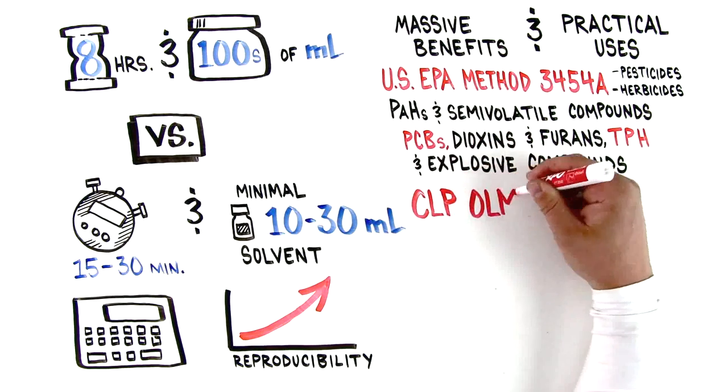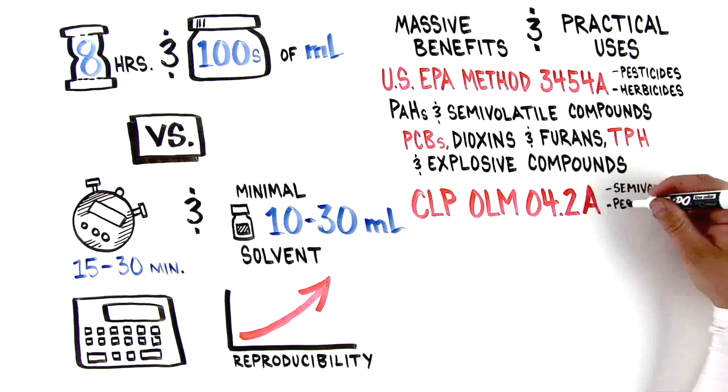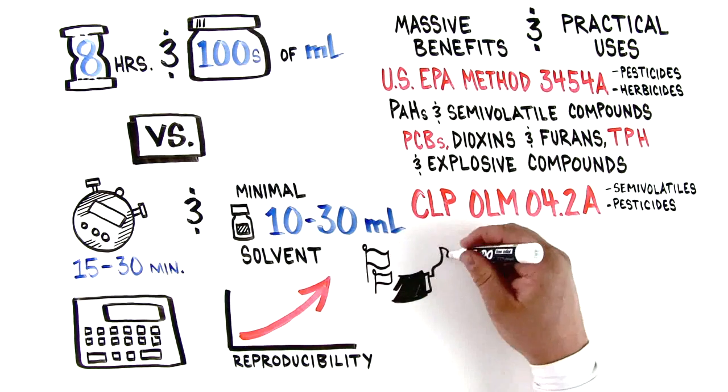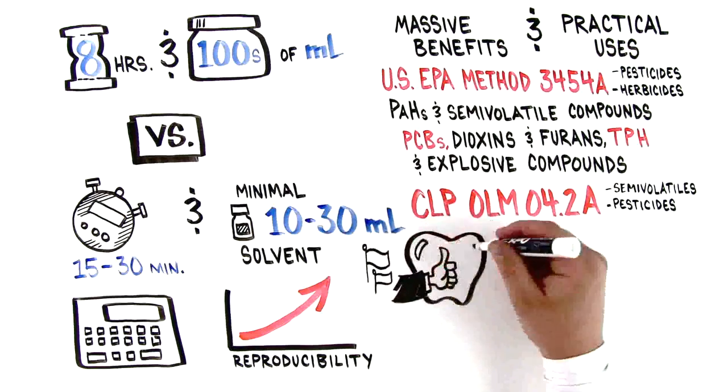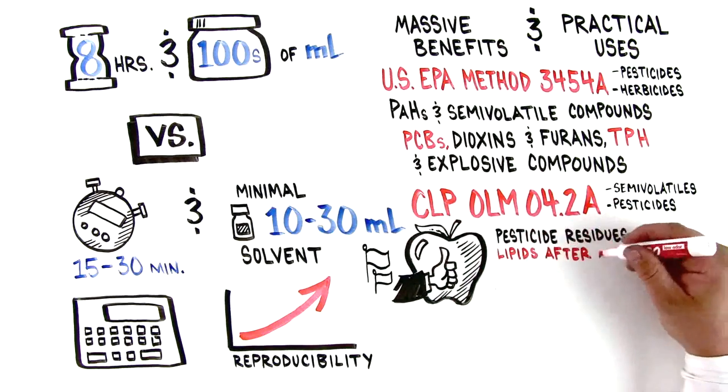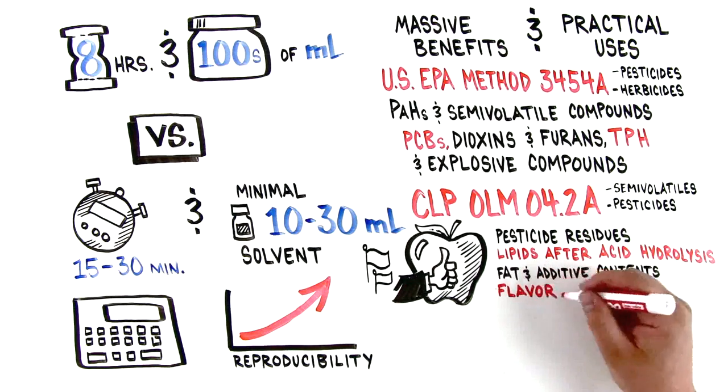Also in CLP OLM 04.2A for semi-volatiles and pesticides. European and Chinese governments have approved the accelerated solvent extraction technique to determine contaminants in food, like pesticide residues, lipids after acid hydrolysis, fat and additive contents, and flavor profiles.